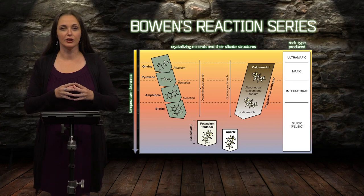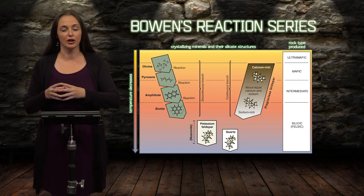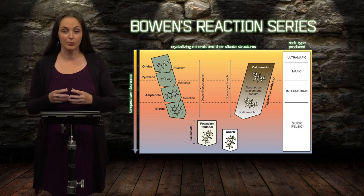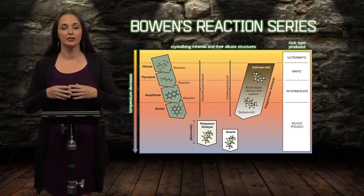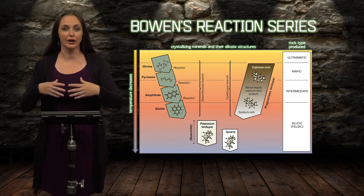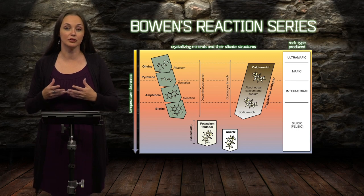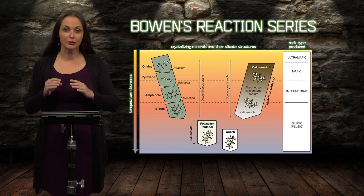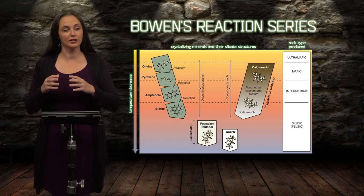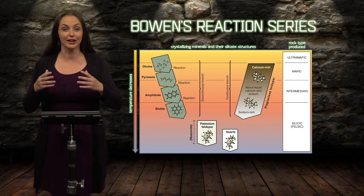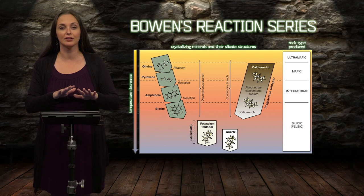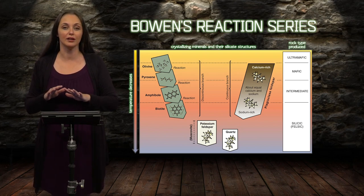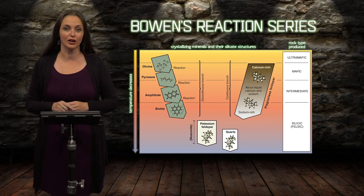Bowen's reaction series essentially told us about the evolution of a magma from a really dense, mafic composition similar to what you would get in the mantle, to something that has a more felsic composition — lightweight, light in color, buoyant, and it essentially makes up the continents. That granitic continental crust and those complex silicate structures play a role in the resistance to erosion of the continents. Now we're going to move that aside and talk about the second main reason why we get igneous rock formation and diversity: the role of plate tectonics.